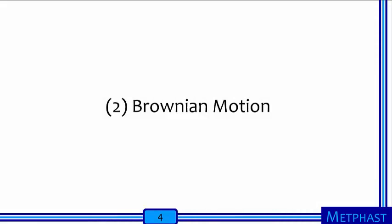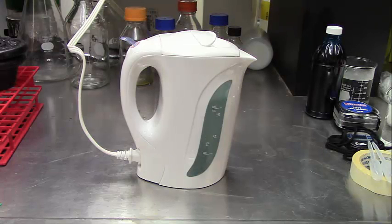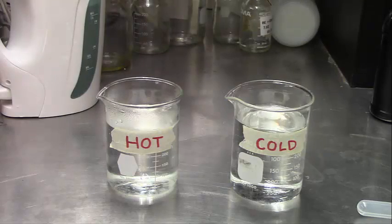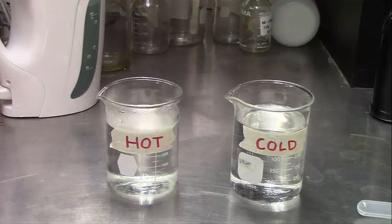The second part of this activity deals with Brownian motion. Prior to starting the activity, be sure to prepare enough hot and cold water for the entire class to work in groups. Each group should have two containers, one with hot water and the other with cold water.